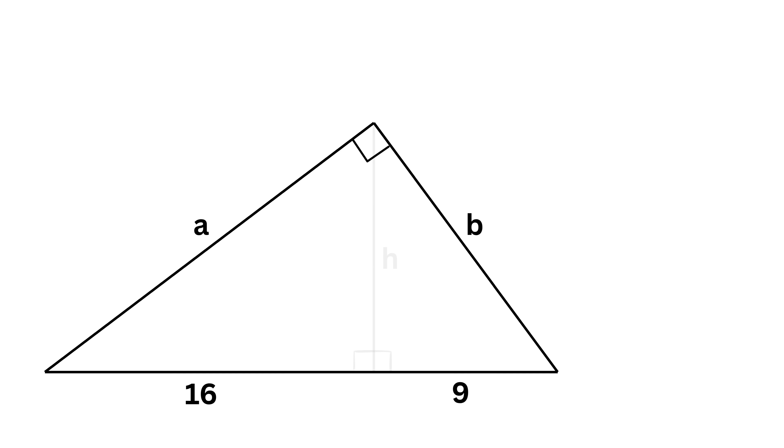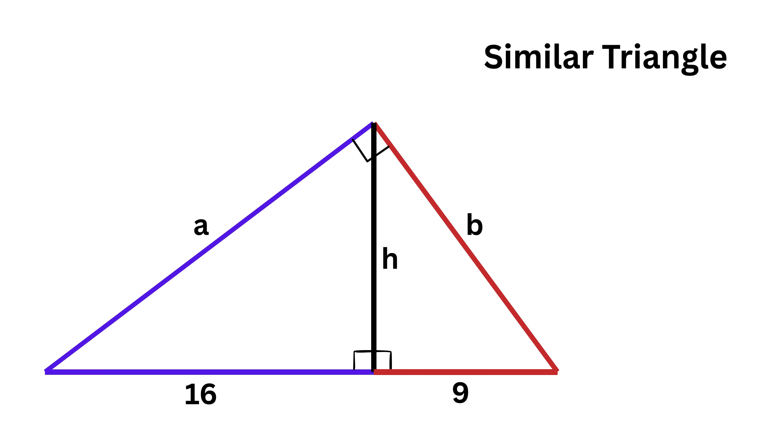Now, here's the most clever part. All three triangles, the big one and the two small ones, are similar to each other, and the reason is purely angle-based. The big triangle has a right angle, and two other angles, which we can call theta and phi.